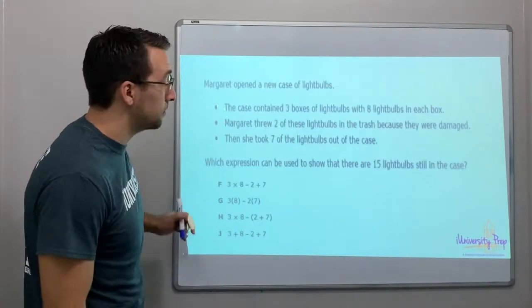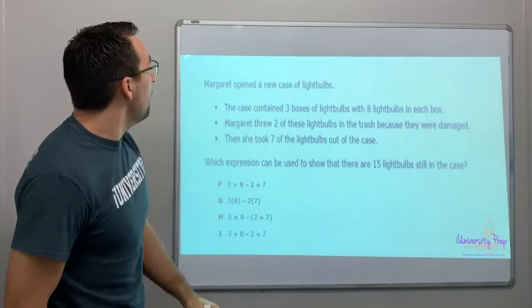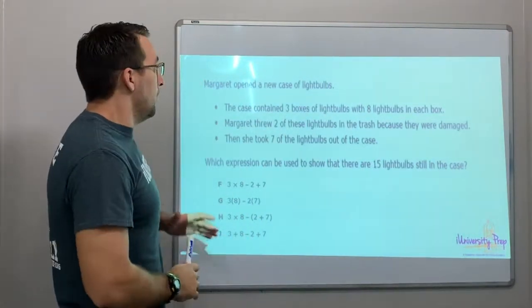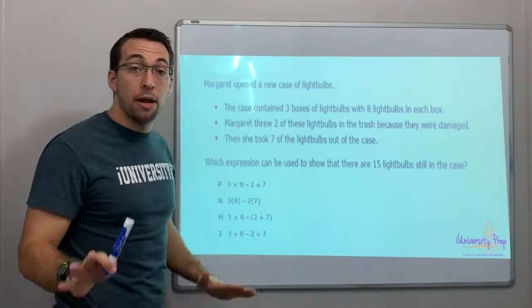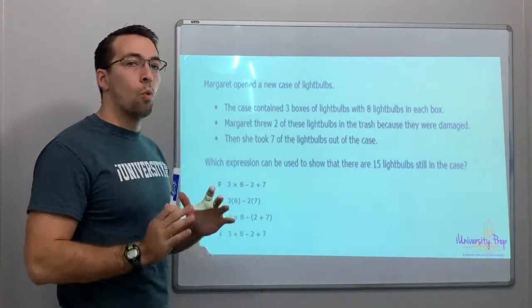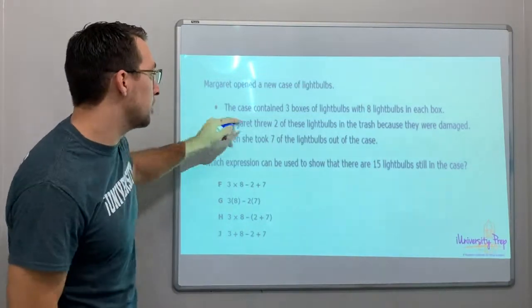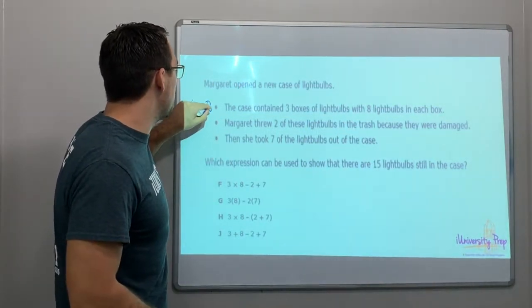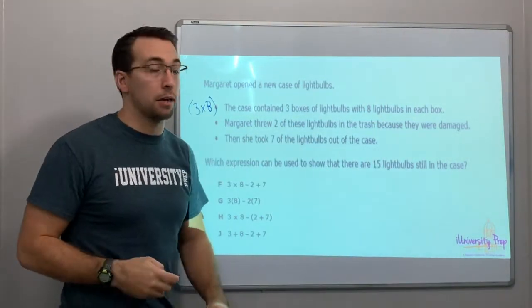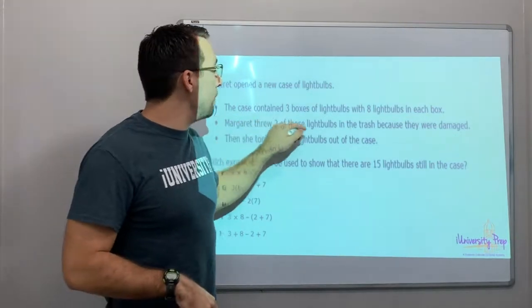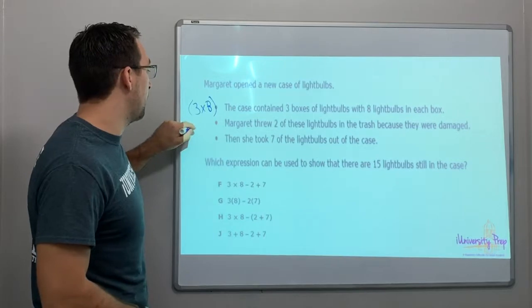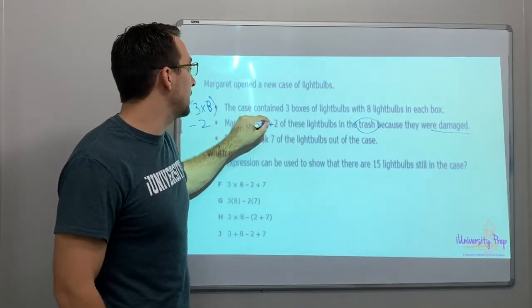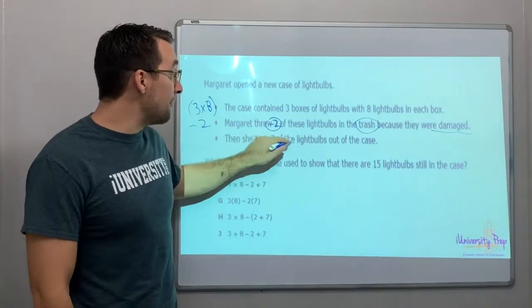Margaret opened a new case of lightbulbs. Anytime you have a problem that has all of these bullets, take a deep breath, slow down, and think. One bullet at a time. The case contains three boxes of lightbulbs with eight lightbulbs in each box - that's 3 boxes times 8 bulbs. Margaret threw two of these lightbulbs into the trash because they were damaged - minus 2. She threw two away, so that's minus 2.